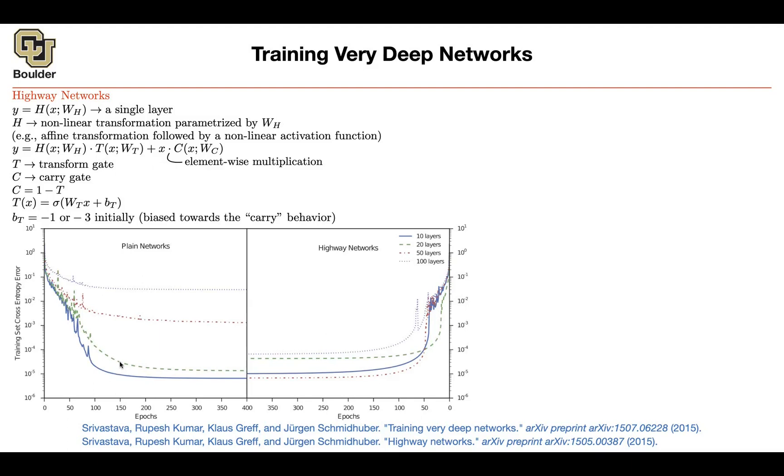Then you increase the number of layers to 20. You increase the number of layers to 50. You increase the number of layers to 100. You are going to look at your cross-entropy error on your training data. This is not even your test data. This is on the training data. You are increasing the capacity of your neural network. But then something weird happens.